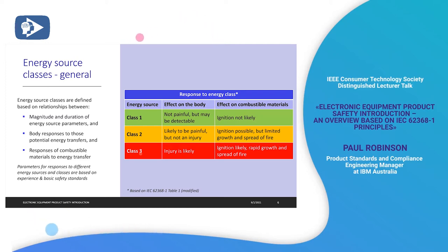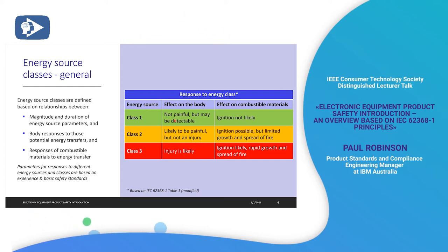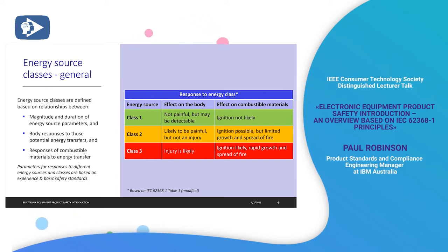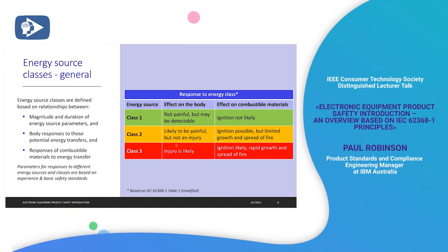Energy source classes — this is a high-level helicopter view of what's in the standard. I'm using traffic light colours: green means okay to touch; yellow means it could be painful or ignition might be possible; red class three means you're very likely to be injured, potentially up to death, and ignition is likely with possible major fire spread. We've got to consider the magnitude, duration, and body responses to those energy sources.